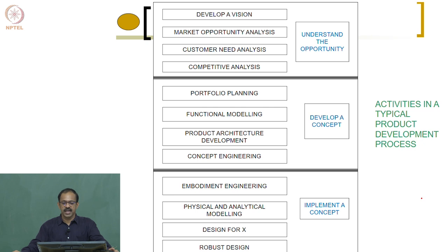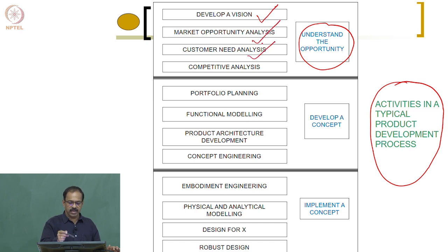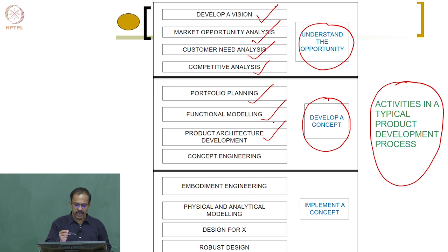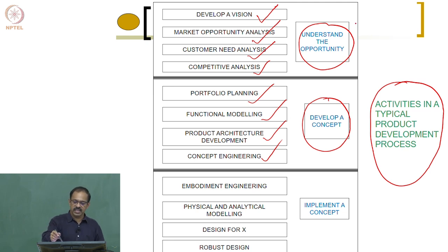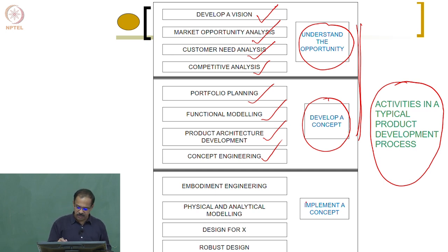To summarize, the three stages and activities in a typical product development process are: first, understand the opportunity — which includes develop a vision, market opportunity analysis, customer need analysis, and competitive analysis; second, develop a concept — which includes portfolio, functional modeling, architecture, and concept engineering; third, implement a concept. We will be discussing the first two in detail in the coming classes over the next two months. The third stage will not be covered in this course.